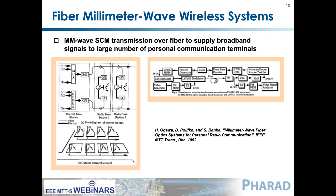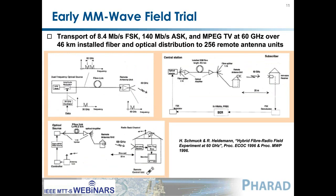Work done at AT&T several decades ago was really the first demonstration of a millimeter wave communication system that used an optical fiber remoting link. For these very high frequencies, you need a different type of encoding technology — this was the first demonstration of using a high-frequency lithium niobate external modulator. In Germany, in a similar timeframe about 20 years ago, they looked at even higher millimeter wave frequencies up to 60 gigahertz, doing a field trial transporting broadband signals — voice and video — at very high millimeter wave frequencies. They biased the modulator at its minimum transmission point to generate twice the carrier frequency.